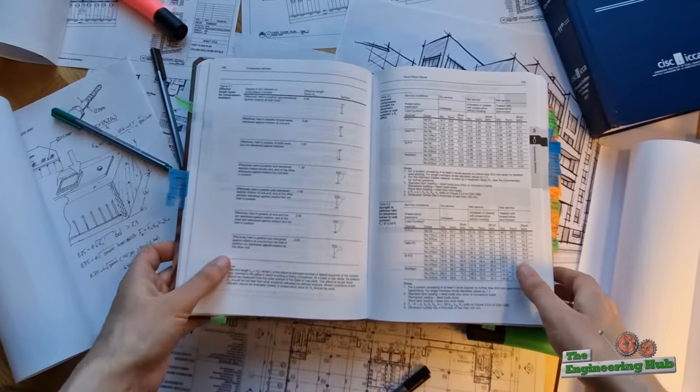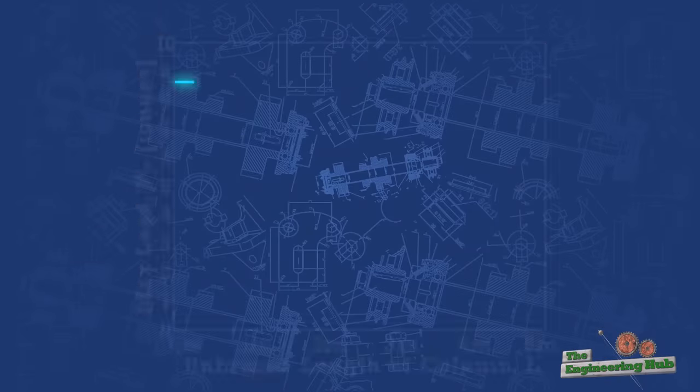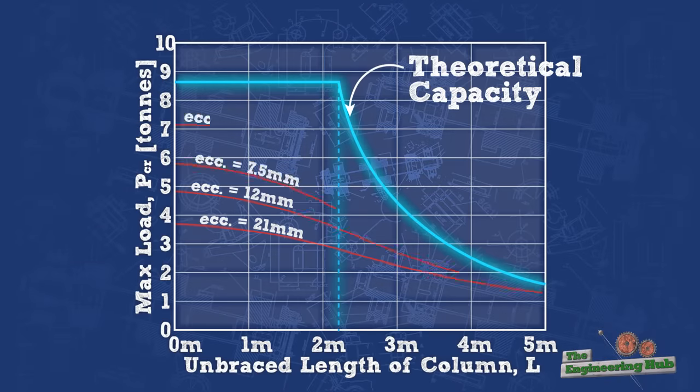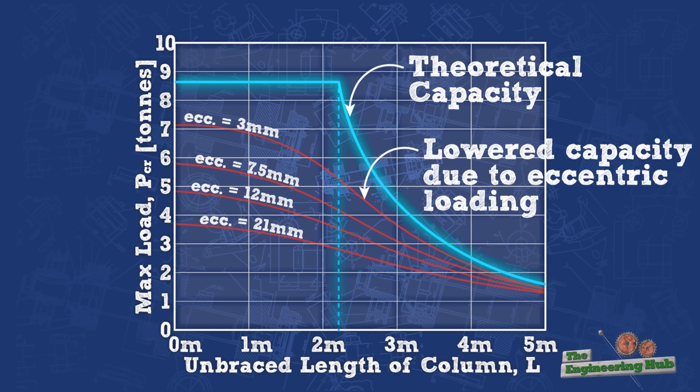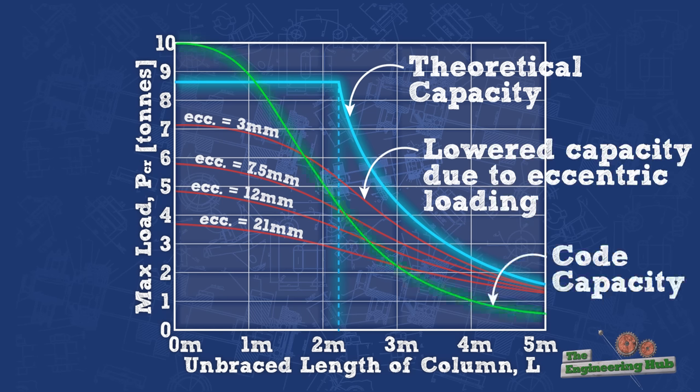After performing the calculation as per the provisions in the design manual, it turned out that the code is conservative for longer columns. However, it allows higher loads for shorter columns that could not buckle. This is because when buckling is not an issue, the material can be loaded past its yielding point, but still away from its ultimate capacity, which is associated with a complete loss of strength.